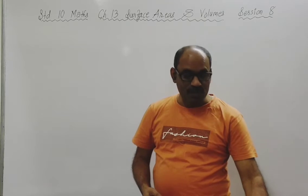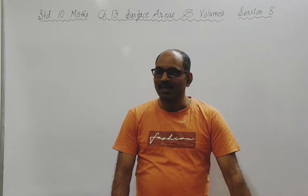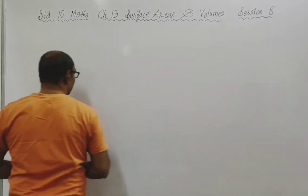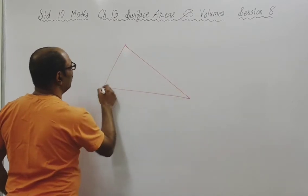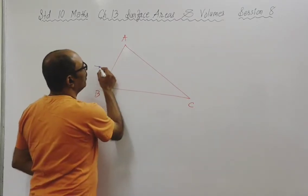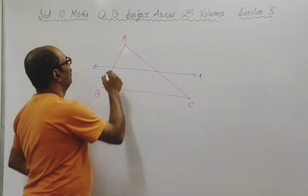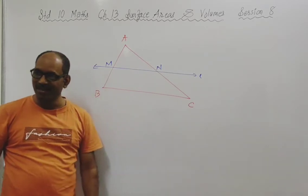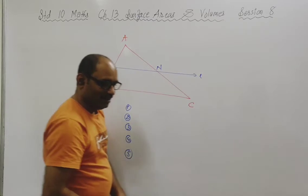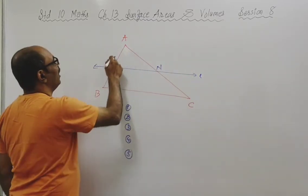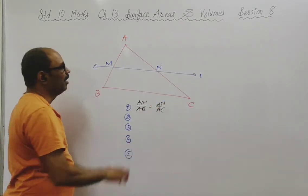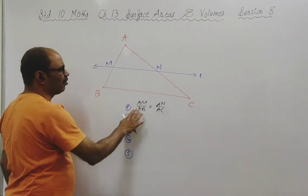Before I proceed further to the derivation of that formula, we will have to recall one concept of similar triangles. There is triangle ABC, and there is a line MN parallel to BC, intersecting the two sides in two distinct points M and N. From Theorem 6.1, AM upon AB is equal to AN upon AC.